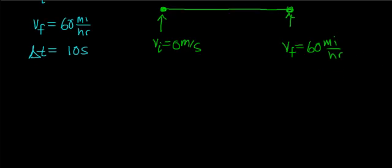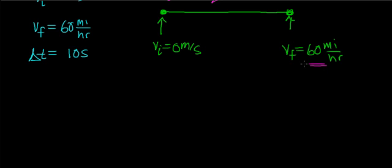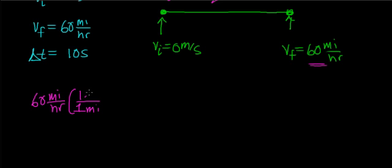Now to calculate the acceleration, we need to convert this 60 miles per hour to meters per second, so that we can be in our SI units. To do that, I'm going to first convert my units of miles over to kilometers, then kilometers over to meters. I know that one mile has 1.61 kilometers, and then I need to go from kilometers over to meters — I know one kilometer has 1,000 meters.